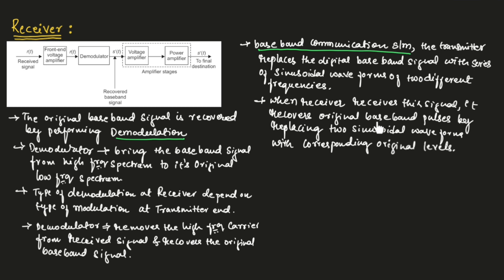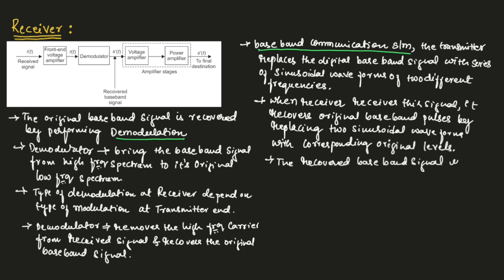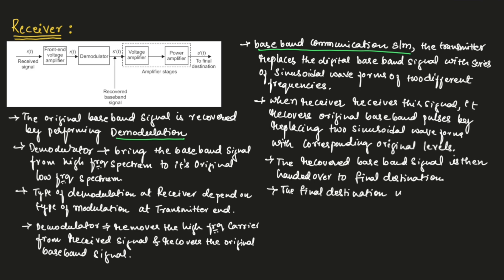The receiver recovers the original baseband pulses by replacing the two sinusoidal waveforms with the corresponding original levels of the signal. The recovered baseband signal is then handed over to the final destination, which uses a transducer to convert this electrical signal to its original form.